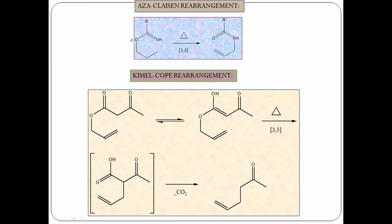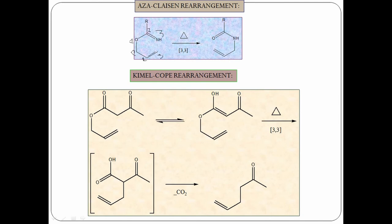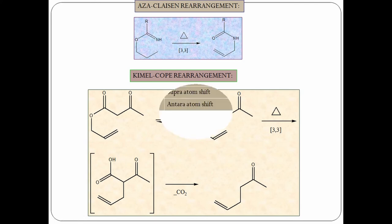In Aza-Claisen rearrangement, a similar mechanism to Cope or Claisen takes place — single bond forms between 3,3 and double bond between 1,2 atoms. The substrate exists in enol form and is subjected to Claisen rearrangement to give a beta-keto acid. Under heating, decarboxylation occurs — loss of CO₂ — giving an alpha-beta, gamma-delta unsaturated keto compound.